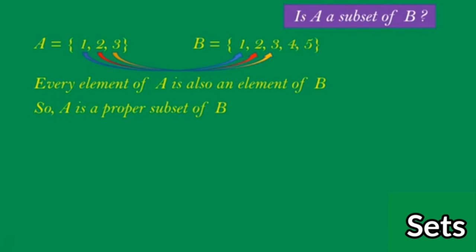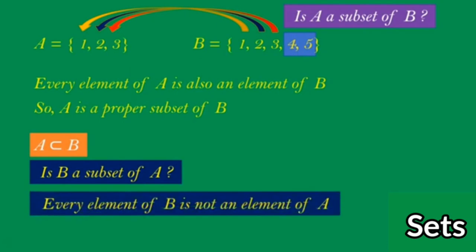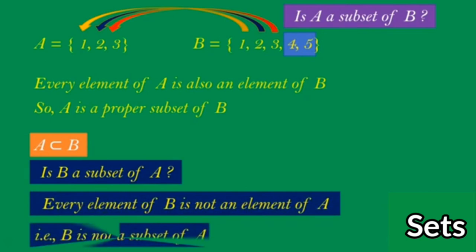B has 4 and 5 as extra elements, so A is actually a proper subset of B. Now the question is: is B a subset of A? To check, we need to verify if every element of B is also an element of A. But B has 4 and 5, and they are not in A. That means every element of B is not an element of A, so B is not a subset of A.